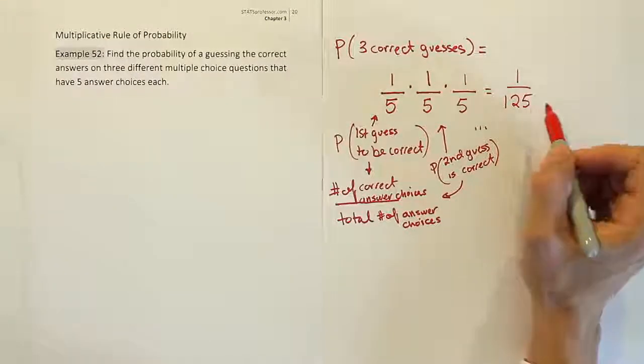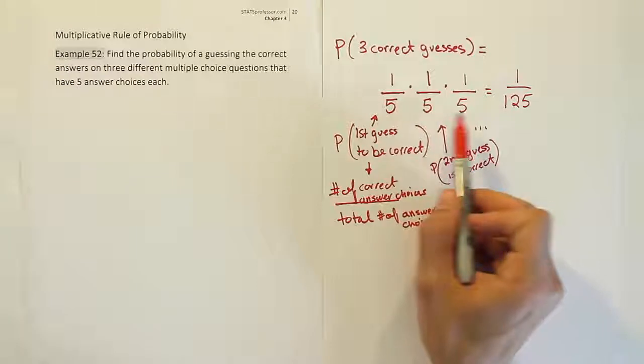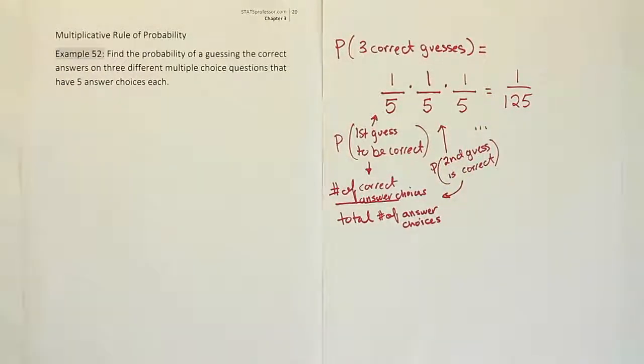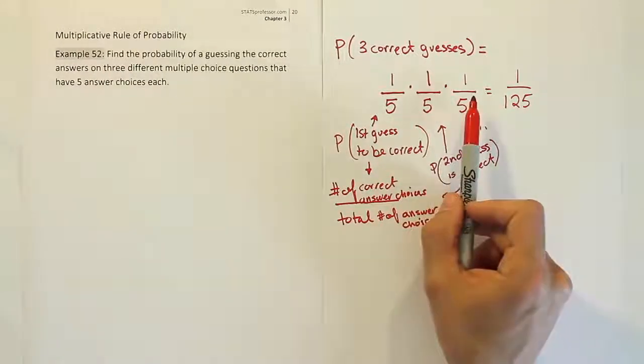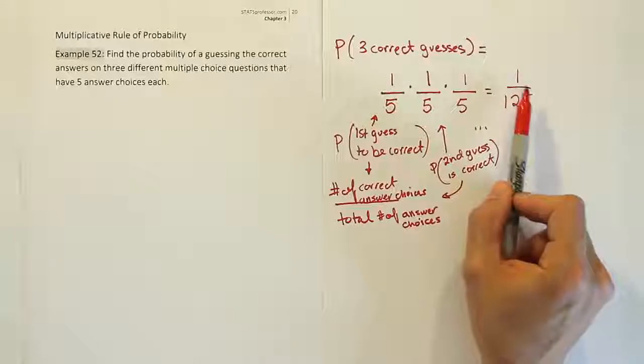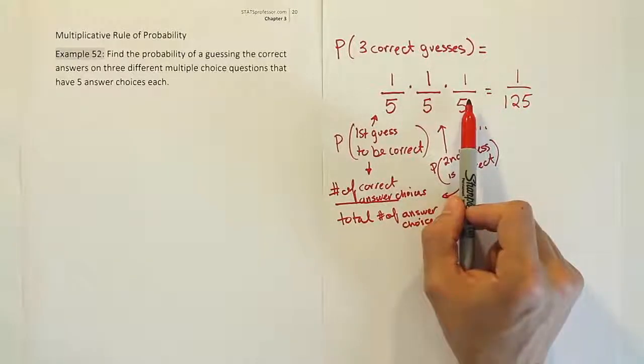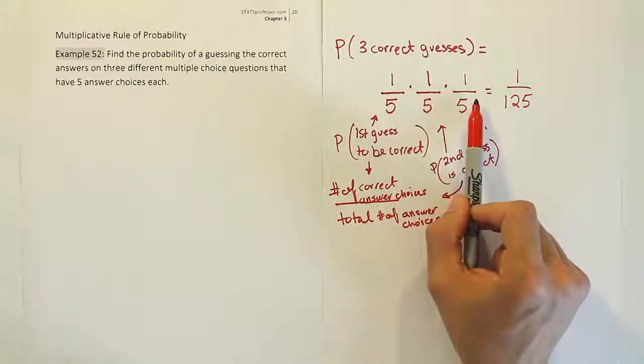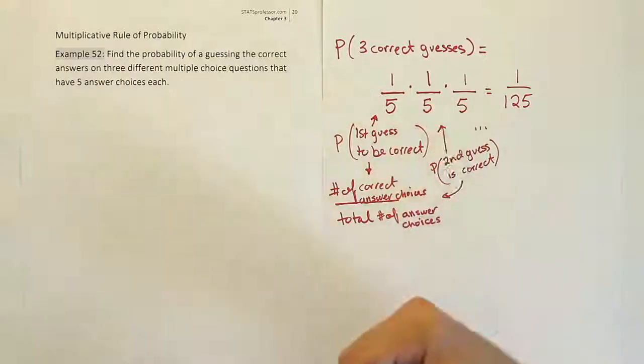And we end up with 1 over 125 because 5 times 5 is 25 times 5 more is 125. And at that point, you'd say it's less than 1% chance that a person would guess their way to 100%. And in fact, it'd be less than a 1% chance that you would even guess to a passing grade in that sense, since the only way to pass a three-question quiz is to get all three correct.